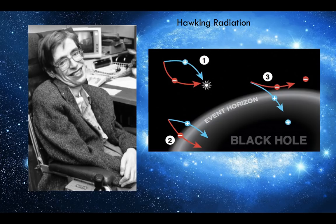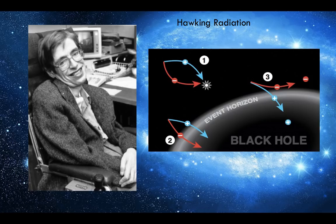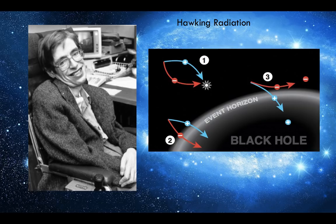Primordial black holes with masses less than 10¹⁵ grams are thought to have all evaporated by now. However, there has been no verifiable observational evidence for any such tiny black hole events. The largest black holes in the universe would take up until 10¹⁰⁰ years to evaporate, so changes in mass could never be perceptible in our lifespans.